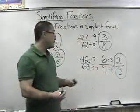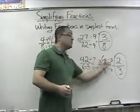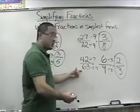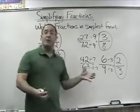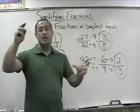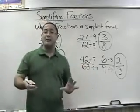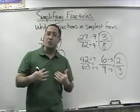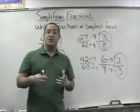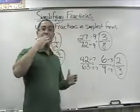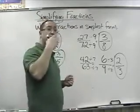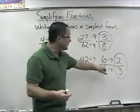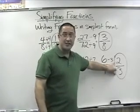I should have divided by 21, not 7. But that's okay — it's a good point. Sometimes the numbers are really big and you may not be able to find the greatest common factor right away. You could start small, but you need to make sure you finish it off and get all the way down to simplest form, to the point where you cannot simplify anymore.